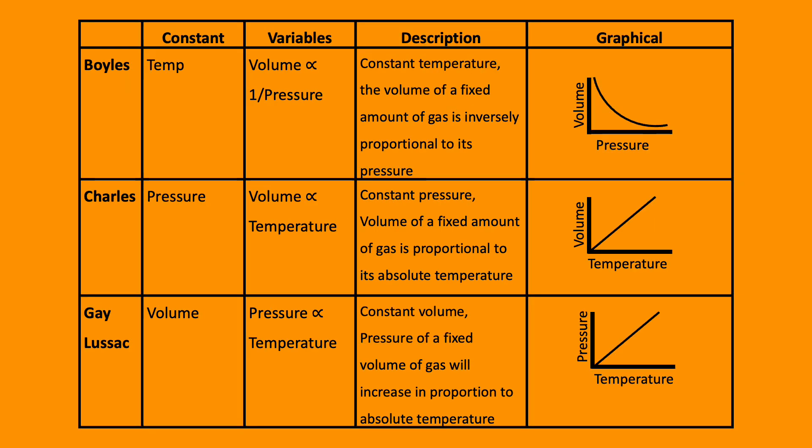Now let's look at the three gas laws. There are three variables: temperature, pressure and volume. For each law, one is fixed. Boyle's law: temperature is fixed. At a constant temperature, the volume of a fixed amount of gas is inversely proportional to its pressure. This produces an exponential graph.